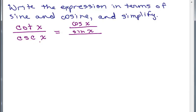The cosecant of x is 1 over the sine of x. So now we have everything written in terms of sines and cosines, and now I have a complex fraction.